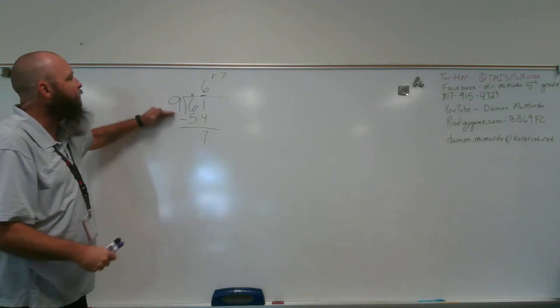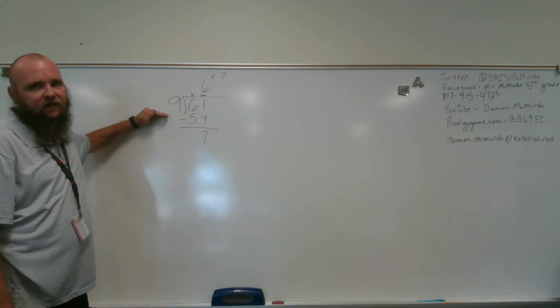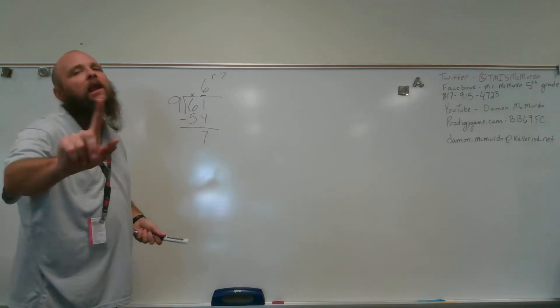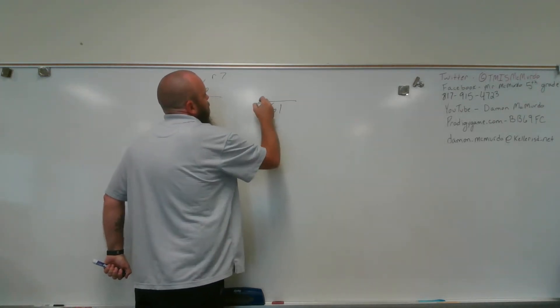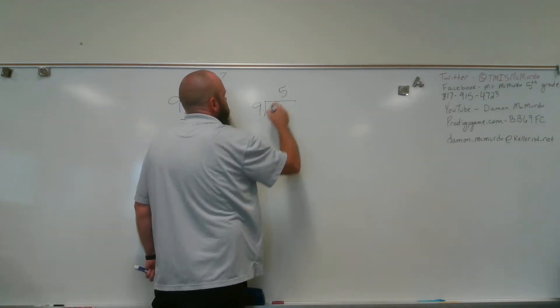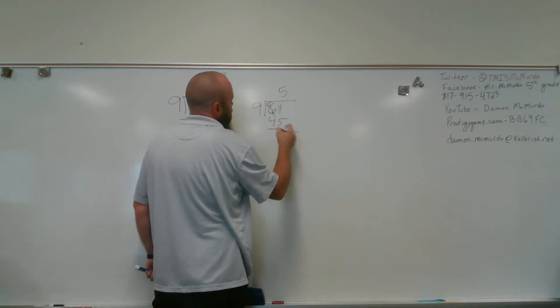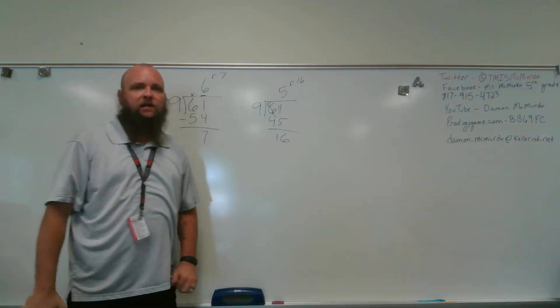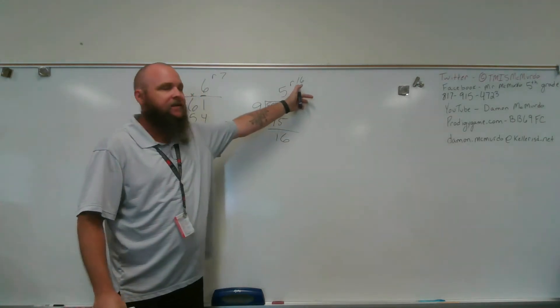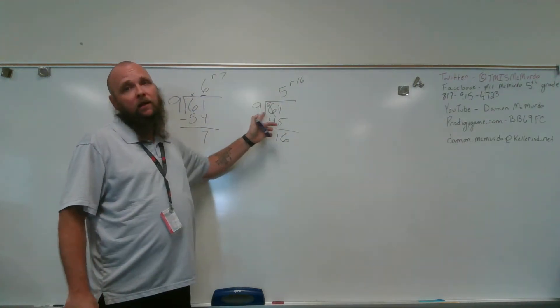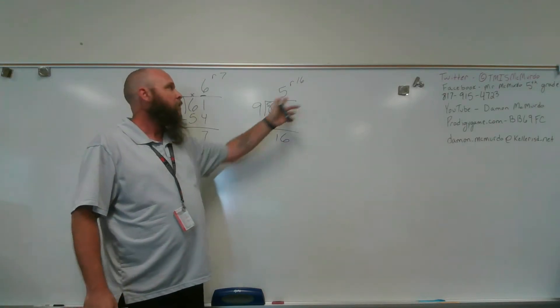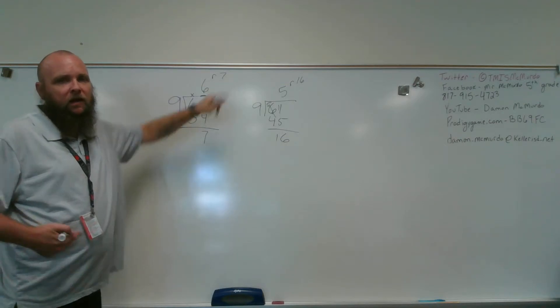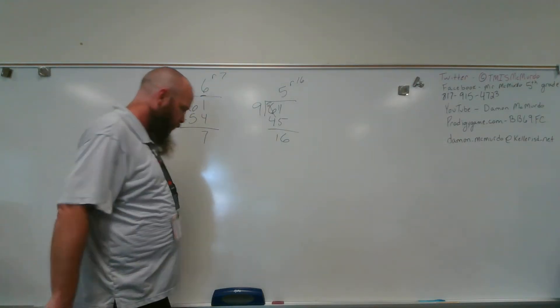My remainder can never be equal to or greater than my divisor. So if my remainder was 9 or greater, then I've done something wrong. So let me show you why. If I had 61 divided by 9, and I said this was 5 remainder 16, I can make a whole other group out of this 16. So if I had 61, and I had 16 left, and I wanted to put them in groups of 9, which is what I'm doing, I have 61 pieces of cake, and I want to put them in groups of 9. I have enough to make another group of 9. That's why I have a quotient of 6. Then there are 7 left over. Those 7 pieces of cake are mine. Because as you can see, that was my Jabba the Hutt impersonation.